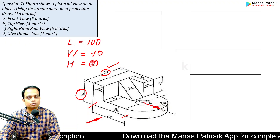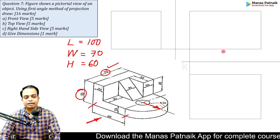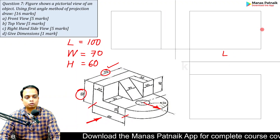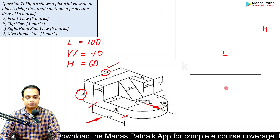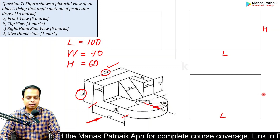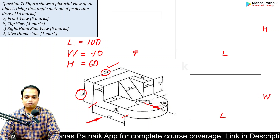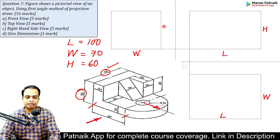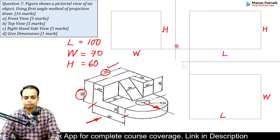With all of these dimensions we can create a box. This represents length and height, this is your width, and the height. Make these three boxes corresponding to the three views.